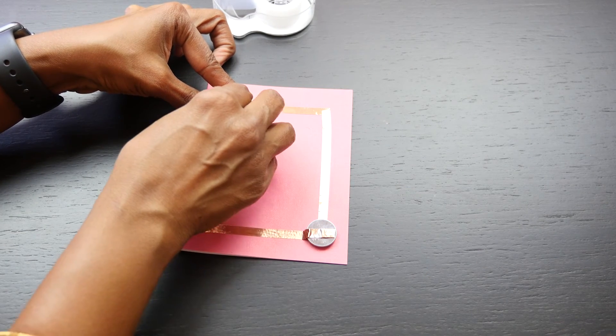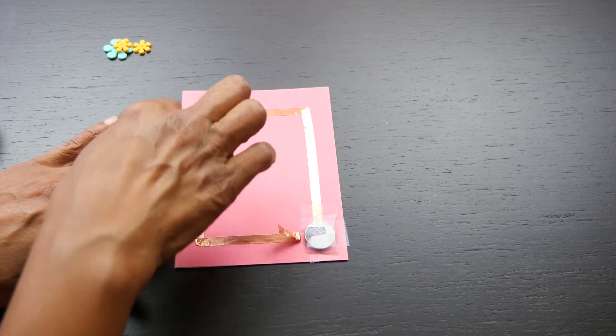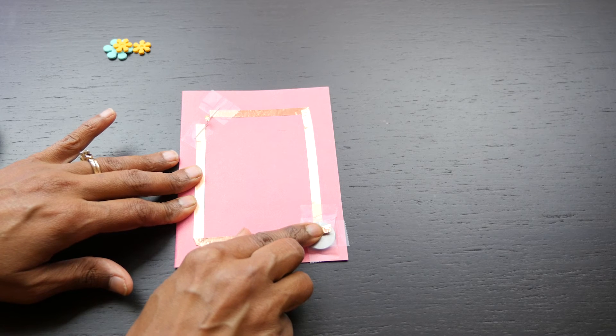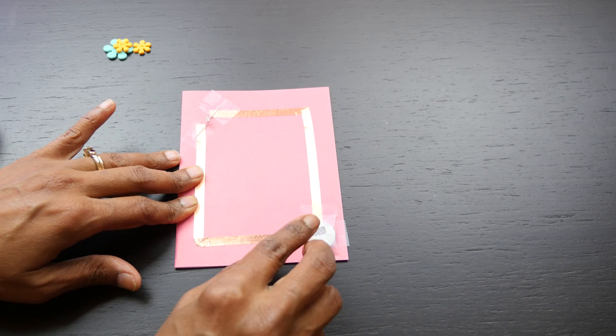The next thing to do is to tape them down. This is how it would look once we put the tapes. Now when I connect this, the LED lights up, and when it's open, it doesn't.